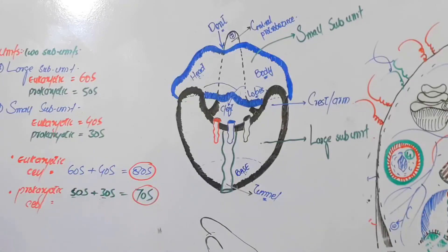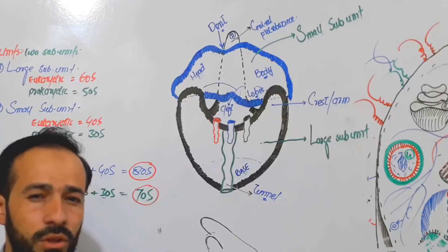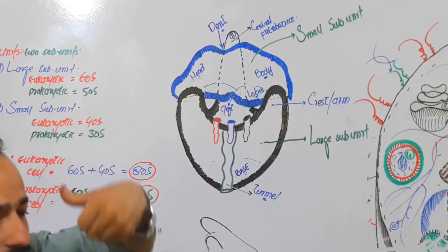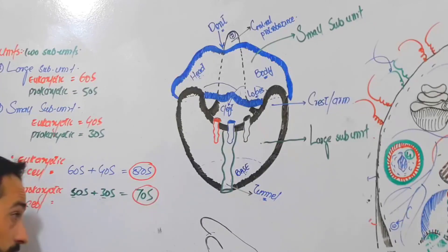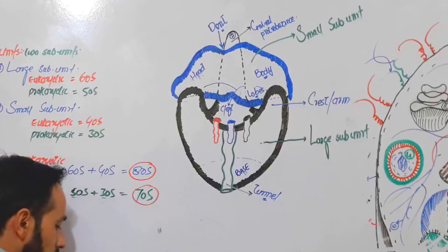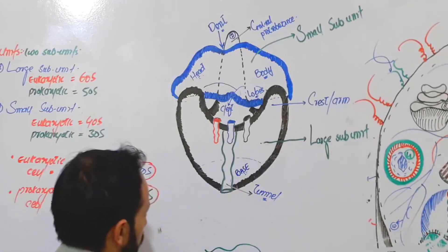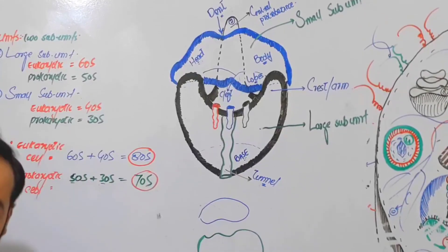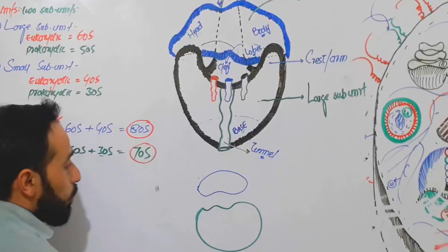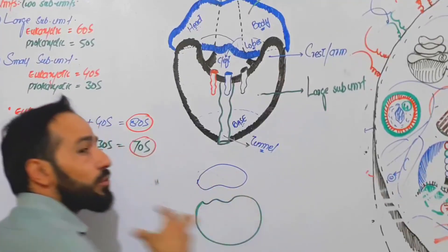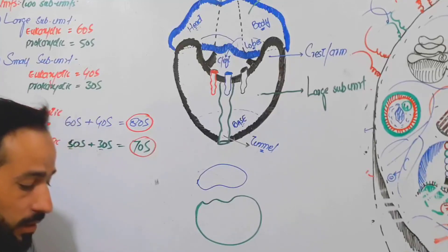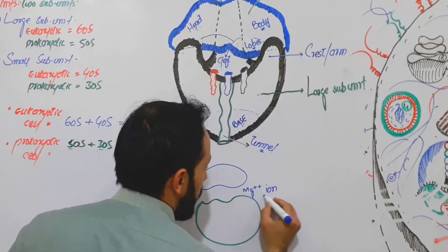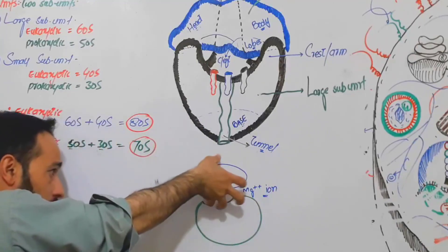In the next lecture we will discuss the chemical composition of the ribosome. But first, let me show you one very important factor responsible for bringing the two sub-units close to each other. Drawing a simple diagram: this is the large sub-unit and this is the small sub-unit. What holds these two units together? That is a very important ion called the magnesium ion — Mg²⁺.